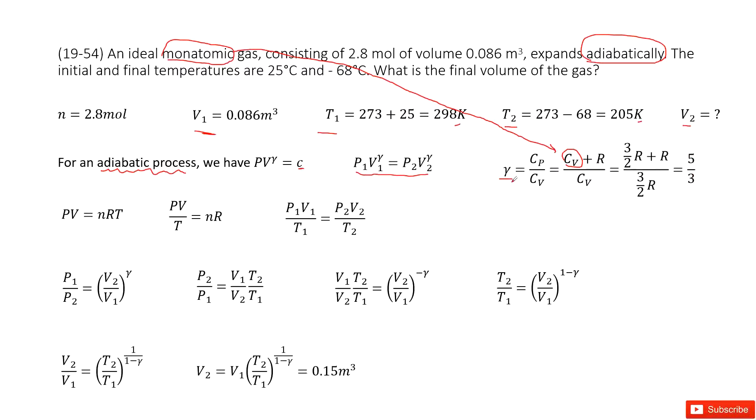The next question: We need to use another function to find the relationships between V and T. So the function we can consider is the ideal gas law, PV equals nRT. In this way, you can write it as initial state P1 V1 over T1 equals P2 V2 over T2.